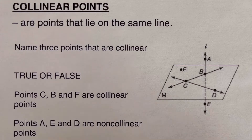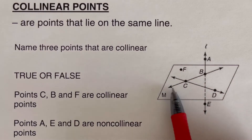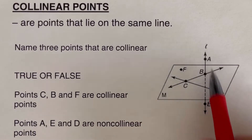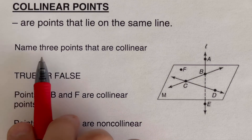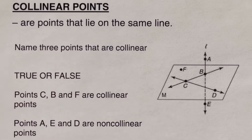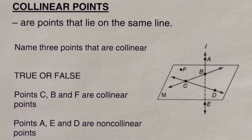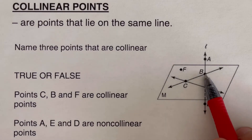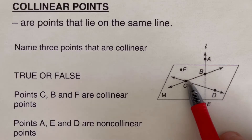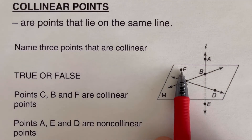Let's take this example right here. We're given a plane and there are three lines in it. We are supposed to name three points that are collinear — collinear means they sit on the same line. So b and c are collinear points because they are on the same line. Point f is not sitting on any of the three lines.